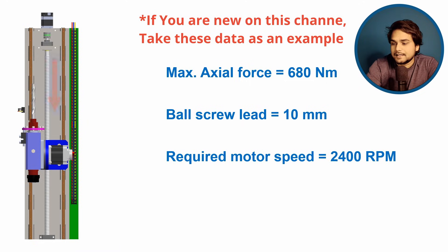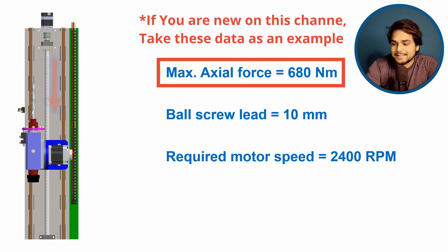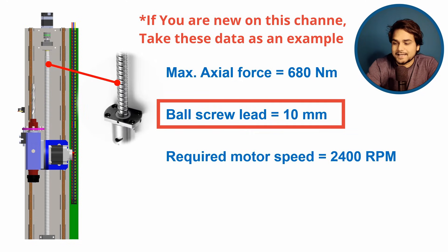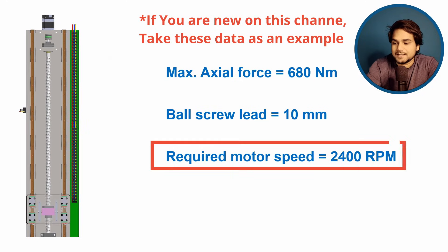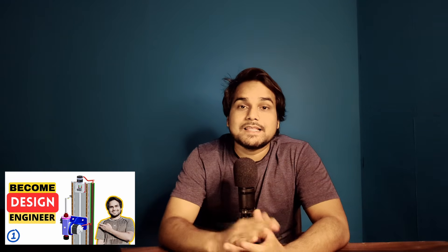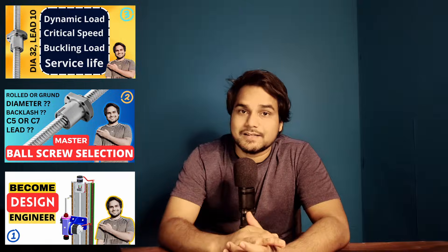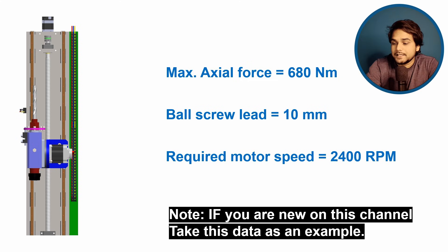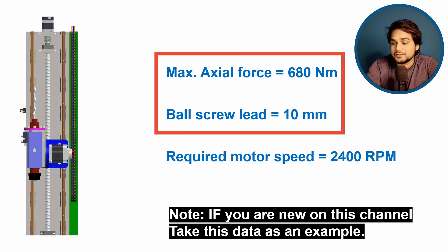So let's start with the calculation of driving torque to actuate the ball screw linear actuator as per the given conditions. The given conditions are: axial load 680 N, ball screw lead is 10 mm, and rotational speed is 2400 rpm — which we calculated in the earlier part of this master class series. Here, only two parameters — axial load and the ball screw lead size — will matter most for the calculation of driving torque in case of a ball screw linear actuator.